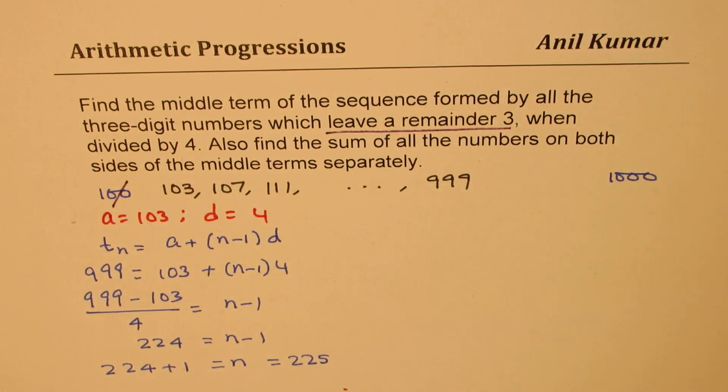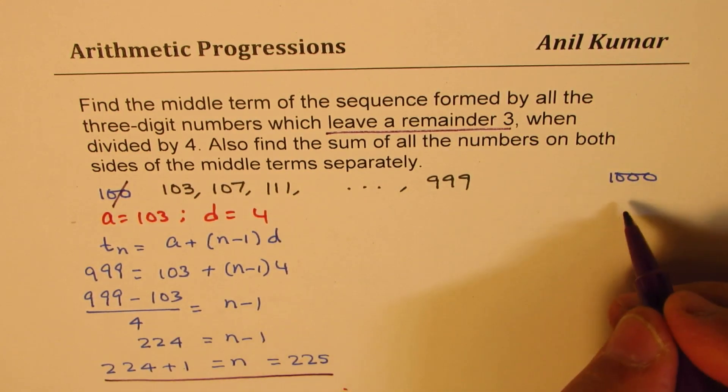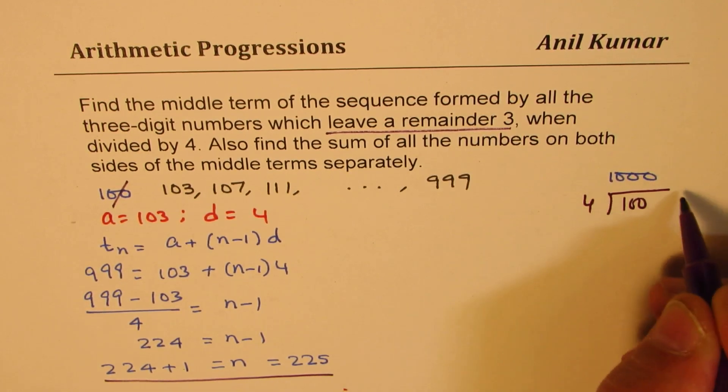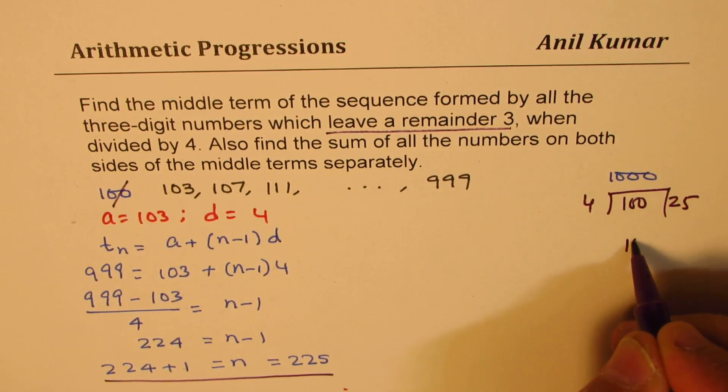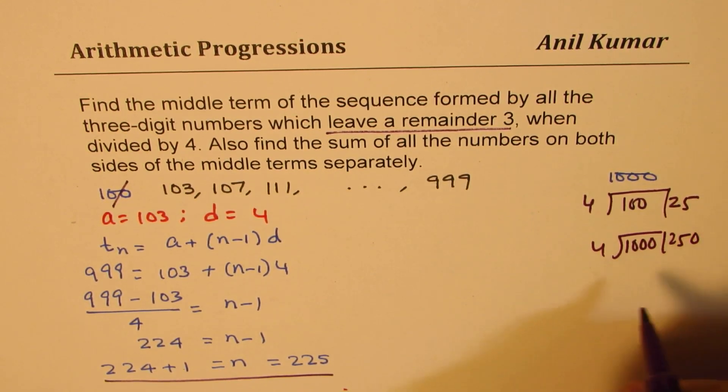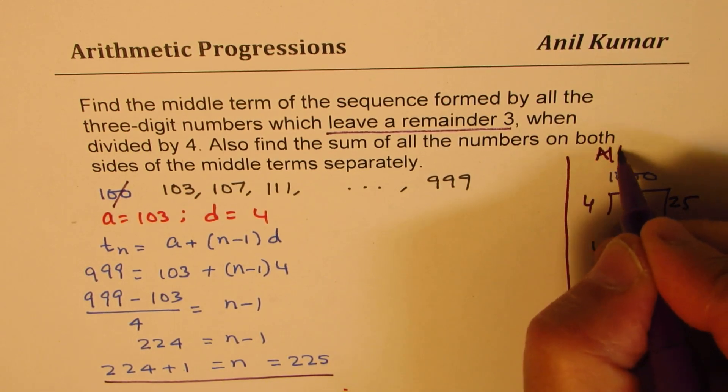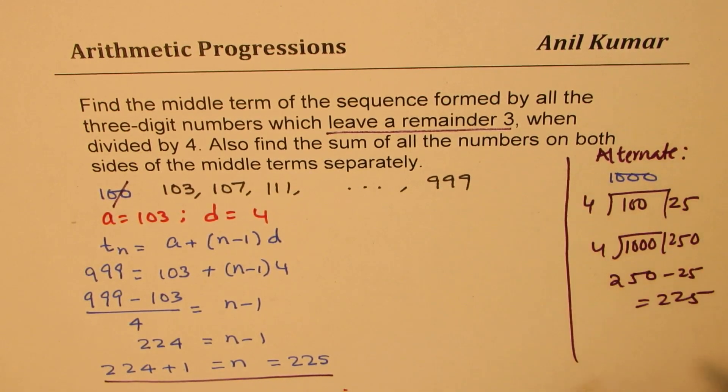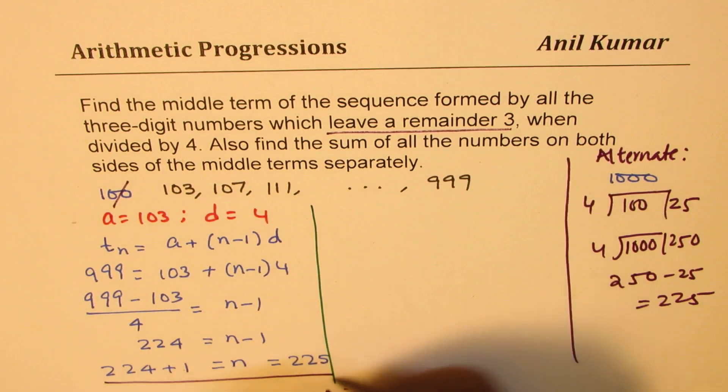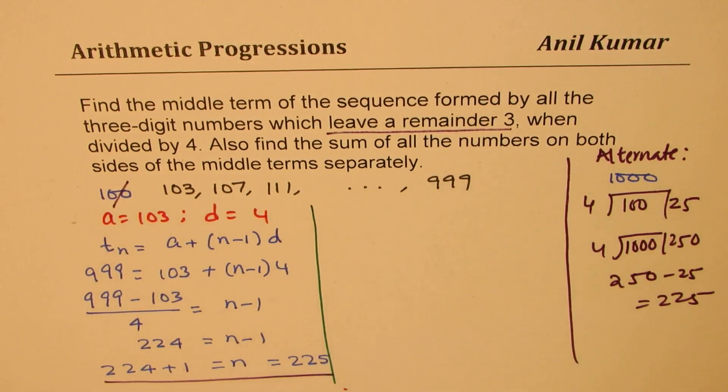So that is one way of finding it. Another way could have been we could have divided 100 by 4, so those are 25, and if I divide 1000 by 4, then we get 250. And 250 minus 25 gives us 225. So this was alternate method to find the number of terms. Either way, we find that the total number of terms are 225. So n is 225.